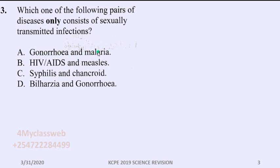So this choice made the whole choice to be inappropriate. If you look at B, HIV and AIDS is sexually transmitted but measles is not sexually transmitted.